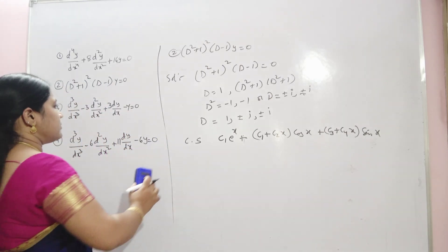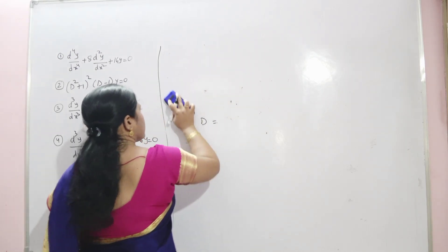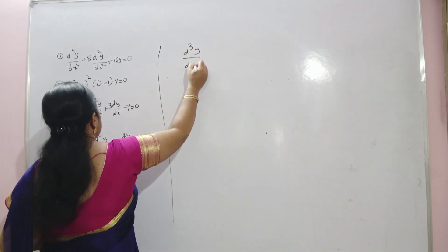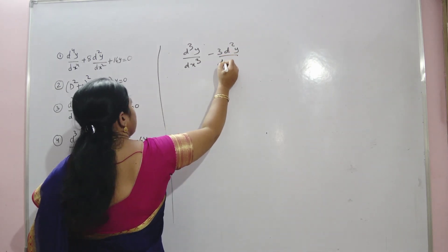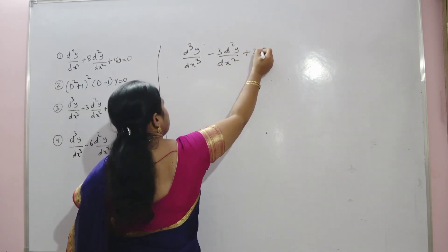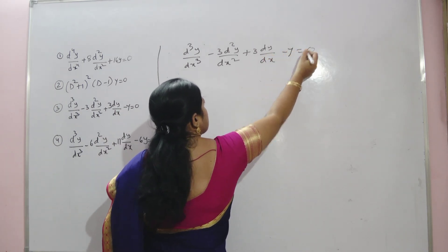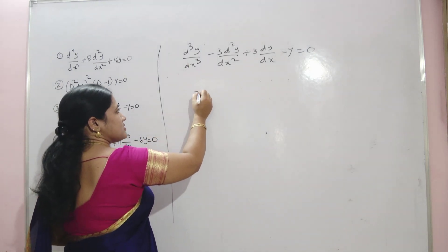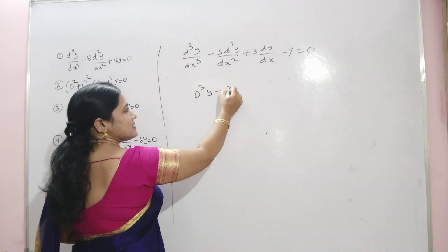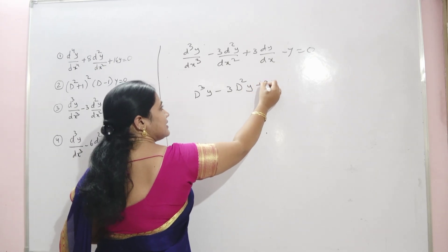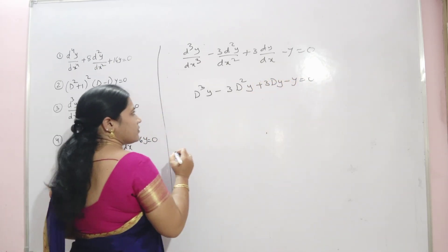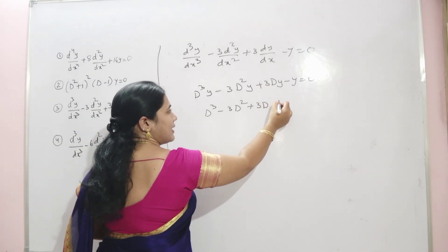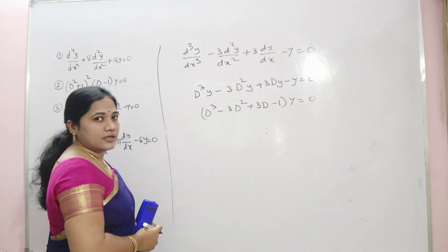The third problem is: d³y/dx³ − 3d²y/dx² + 3dy/dx − y = 0. The symbolic form is D³y − 3D²y + 3Dy − y = 0, or equivalently (D³ − 3D² + 3D − 1)y = 0.